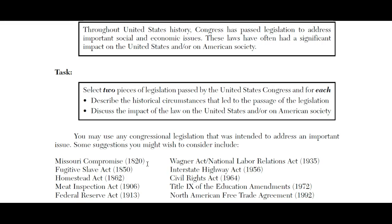The Meat Inspection Act of 1906 came in with Teddy Roosevelt. The historical circumstance was that Upton Sinclair wrote The Jungle, exposing how horrific the meat industry was at the time. The Meat Inspection Act protected consumers so that people knew they were actually buying something healthy to eat. It was the federal government really stepping into regulation of industry for the first time, setting the stage for things like the Pure Food and Drug Act and the Federal Trade Commission.